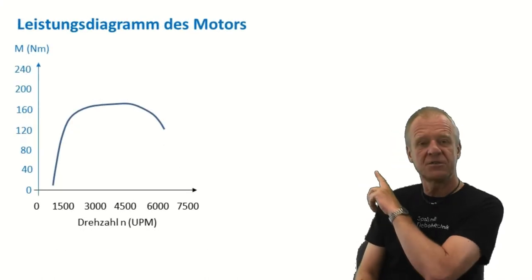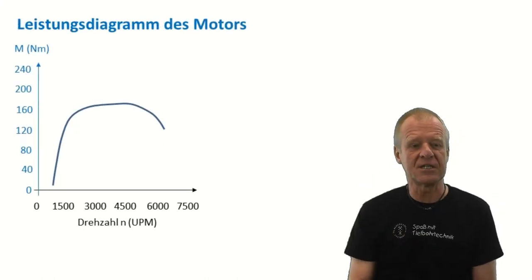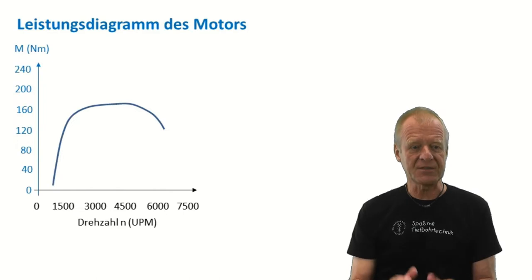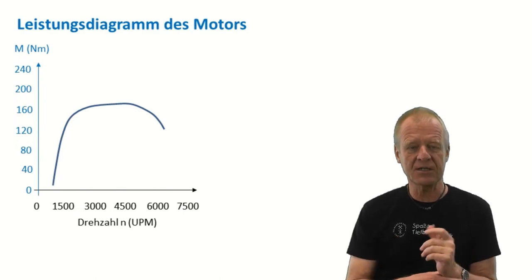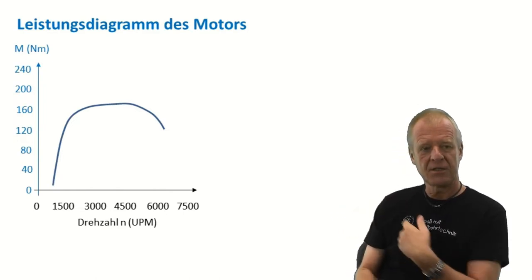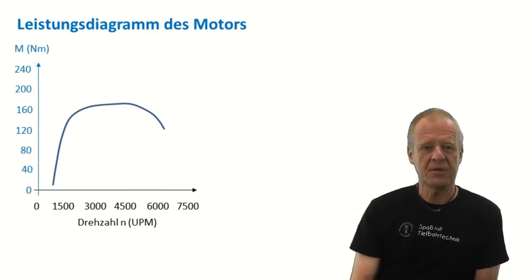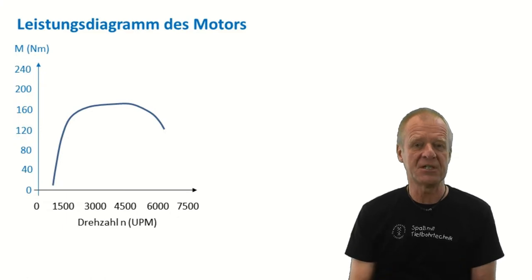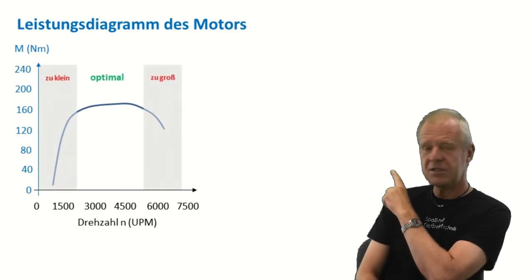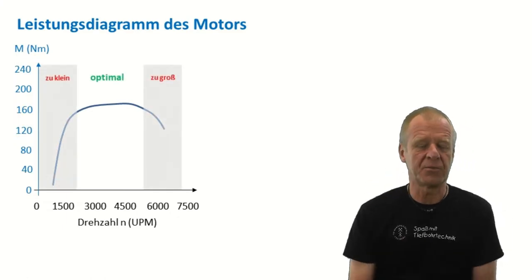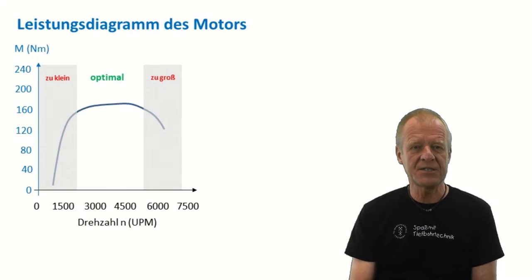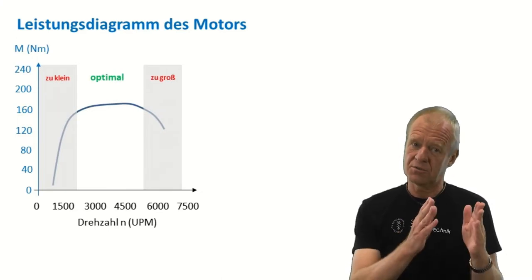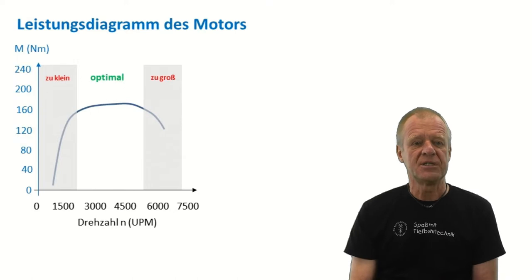We can see in this performance chart: on the horizontal axis we can see the motor RPM, and on the vertical axis we can read out the torque developed by the engine. Here we see clearly that there is an optimal range where the engine works very well. To the left and to the right of this range, the engine does not perform very well as the motor develops only little torque and is quite weak.